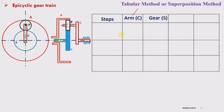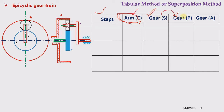Column number three is reserved for the input gear to which we will apply the motion in step number two. The subsequent columns are for the remaining members. You have to be careful while deciding the columns for the gear members. The first column is always for the steps, the second is always for the planet carrier, and the third is always for the input gear. Gear P is placed in the fourth column because gear S is in mesh with gear P, and gear P is in mesh with gear A, so it follows accordingly.